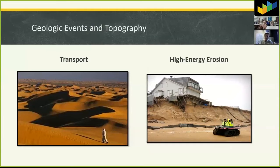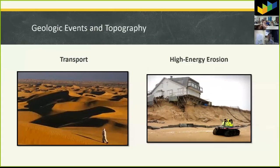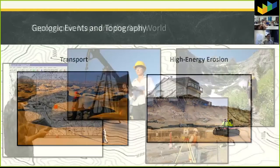High energy erosion is another earth event. Who remembers Hurricane Sandy? Hurricane Sandy took away massive amounts of earth from the beach and essentially totally eroded all that away. If you were to look at a topographic map from before the hurricane and after, you would see all the contour lines would have been much lower.